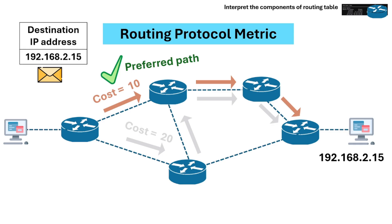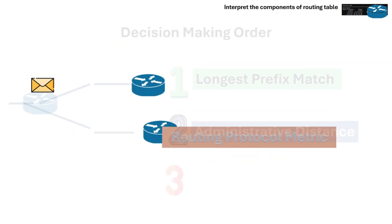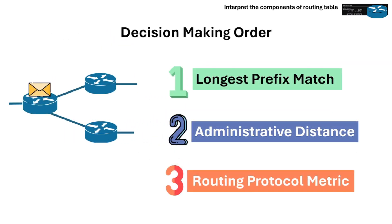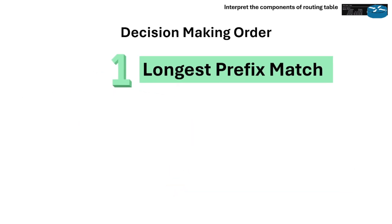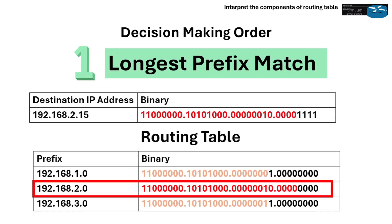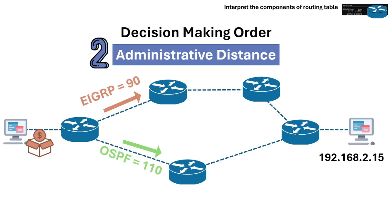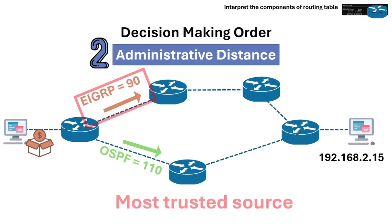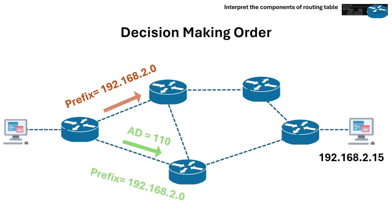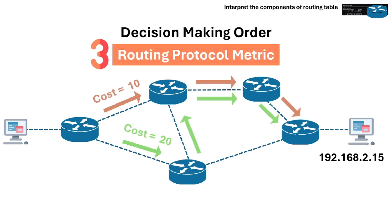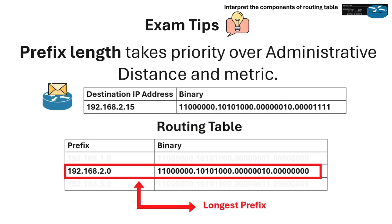Let's review the router's decision-making order by default. When a router decides where to send a packet, it checks for the longest prefix match first — the most specific route wins. If the prefix lengths are equal, we check the administrative distance — the most trusted source wins, which is the lower value. And if the AD and prefix length are equal, the most efficient path wins with the lowest cost.